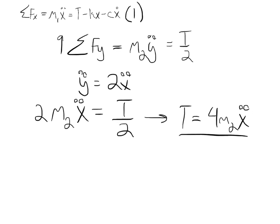So that we get m1 x double dot is equal to 4m2 x double dot minus kx minus cx dot.